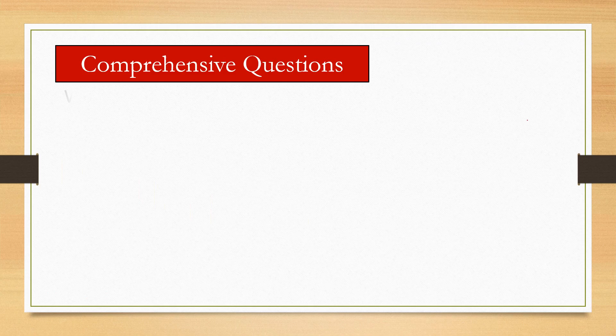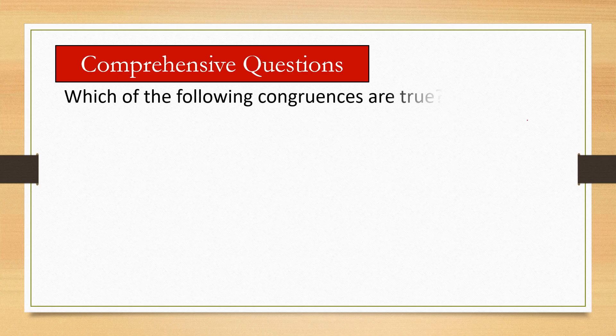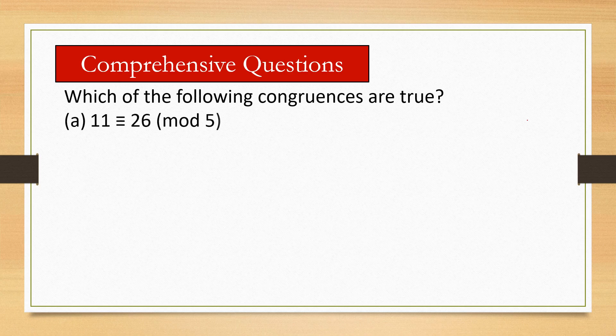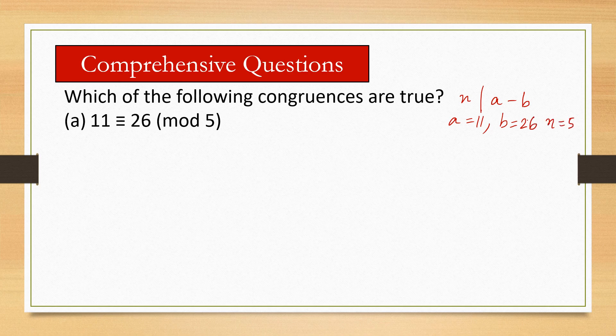Let's solve some questions for better understanding. Which of the following congruences are true? (a) 11 ≡ 26 (mod 5)? This is very simple. As we got the definition that n should divide a minus b. Here, a is 11, b is 26, and n is 5. We have to see whether a minus b is divisible by n or not. So 11 minus 26 equals negative 15, is divisible by 5? Yes, so this is true.